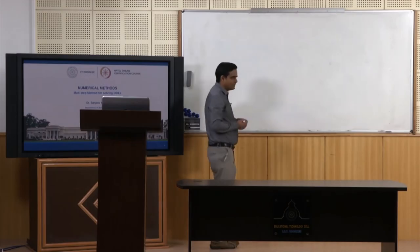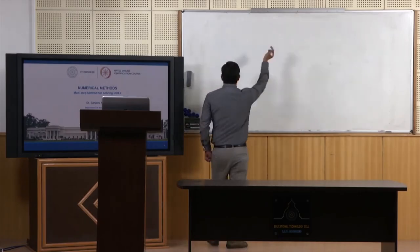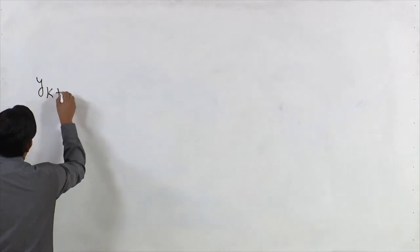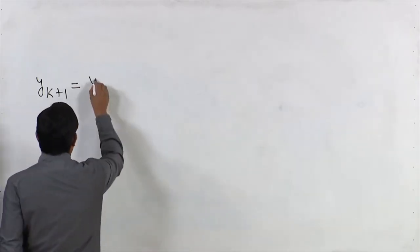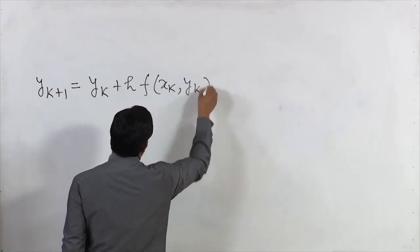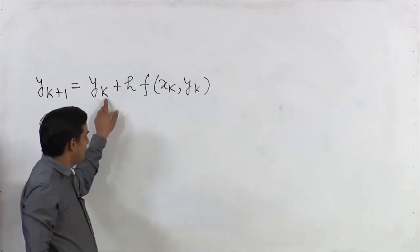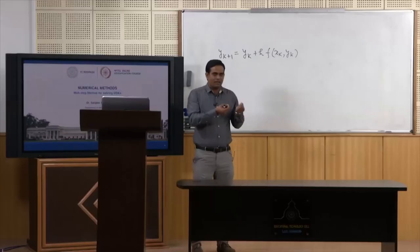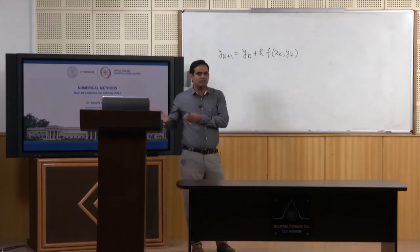In the past few lectures we have talked about Euler's method and then Runge-Kutta method of order 2 and order 4. In all those methods, like in Euler's method, we have taken our approximation of y at x equals x_{k+1} as y_k plus h times f(x_k, y_k).